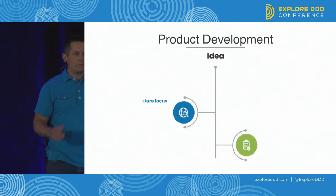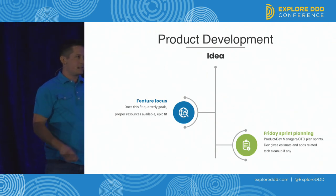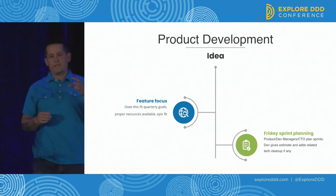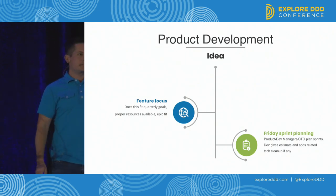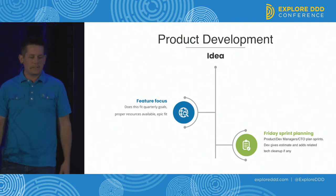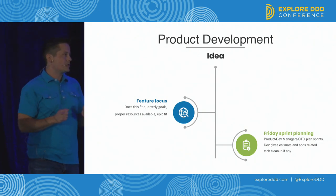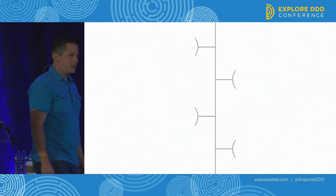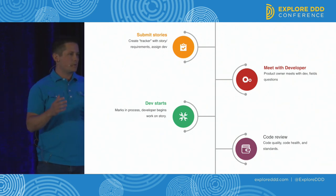At a high level, this is how we build things at InboxDollars. Initially there's an idea - the next few slides are all before we introduced any DDD principles. Someone at the company submits an idea, or we hear something from one of our members. The feature is discussed, usually just within the product team. They go over the normal things: does this fit our quarterly goals, do we have the resources, is it a fit? Every Friday we would have sprint planning meetings where the development managers, the CTO, and the product team would sit down and allocate what everyone's going to work on next.